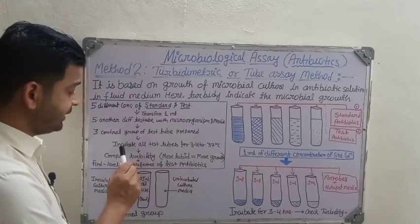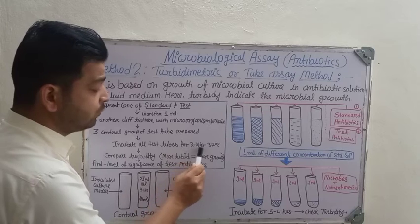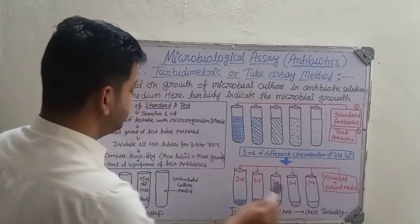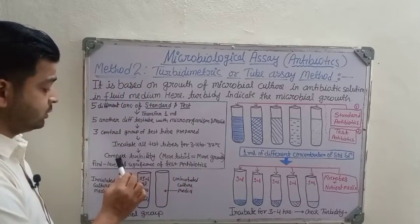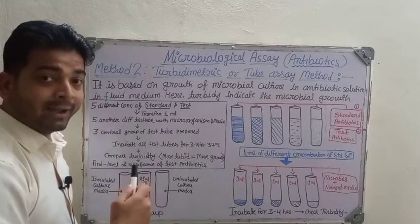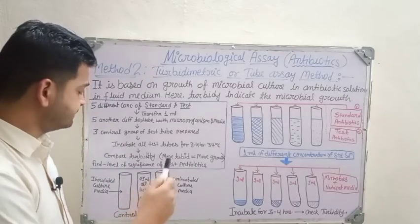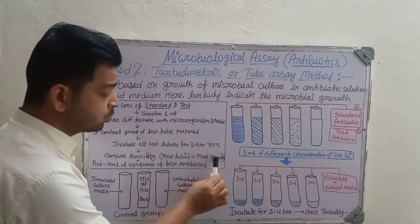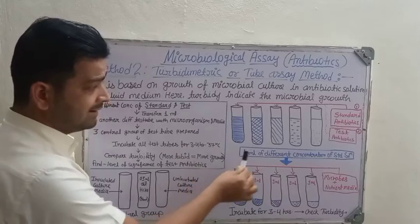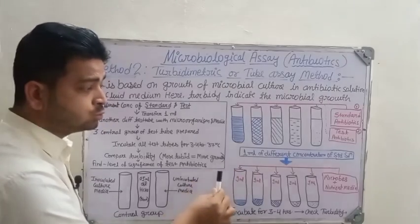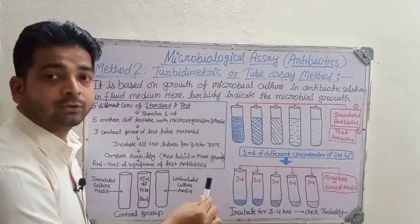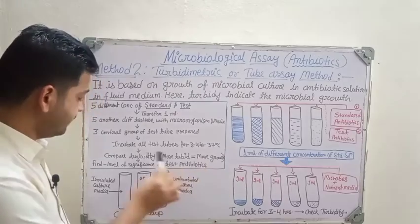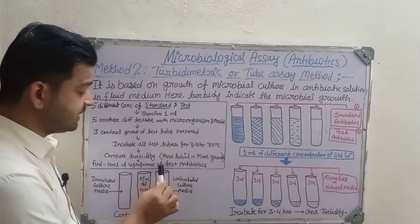All prepared test tubes are incubated for three to four hours at 37 degrees Centigrade. After incubation, we check the turbidity. More turbidity means more microbial growth has occurred, which means the antibiotic was not able to inhibit or kill the growth of the microorganism.